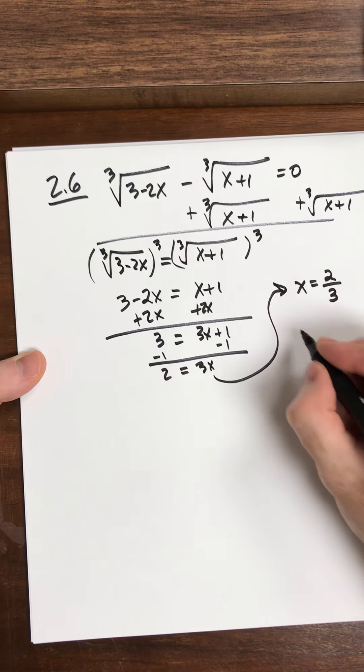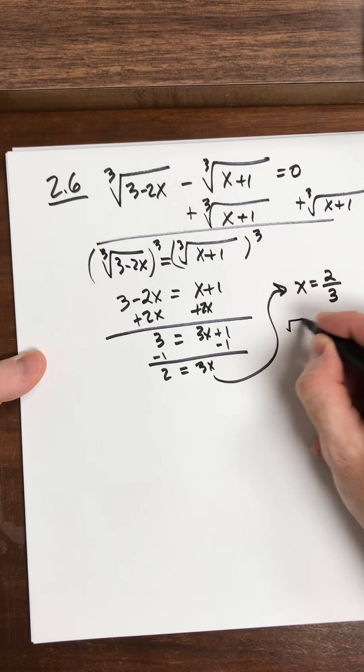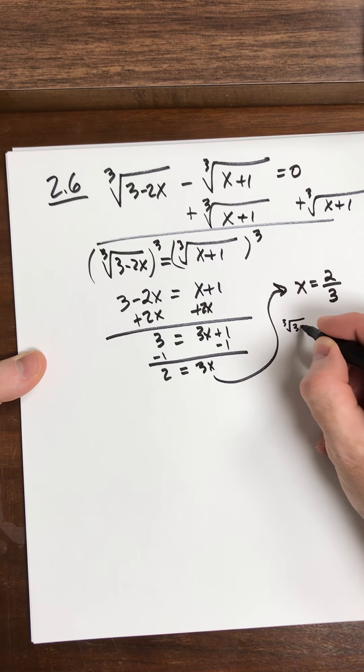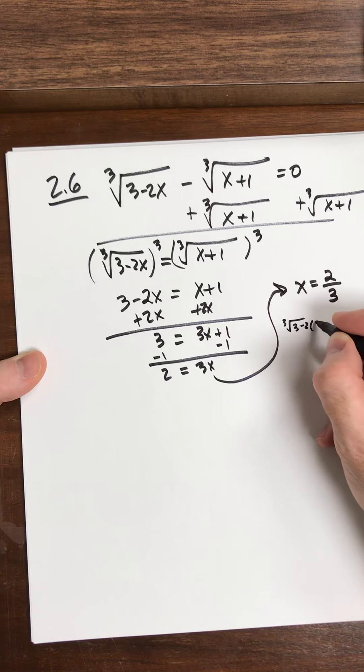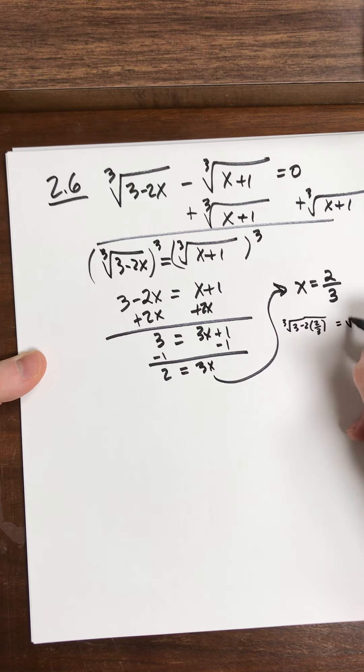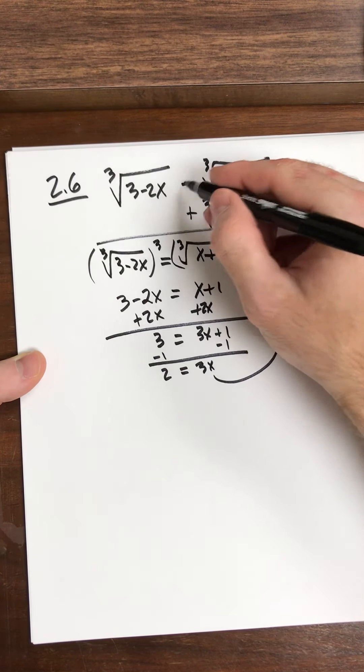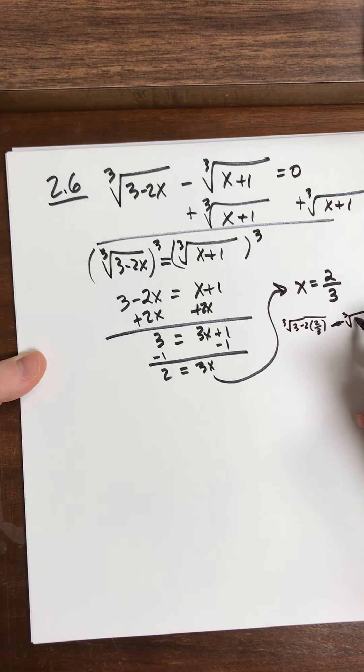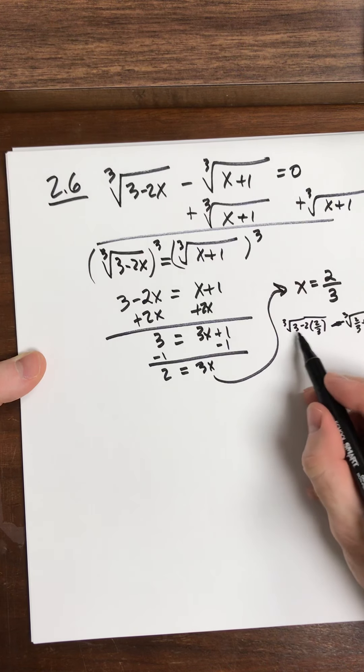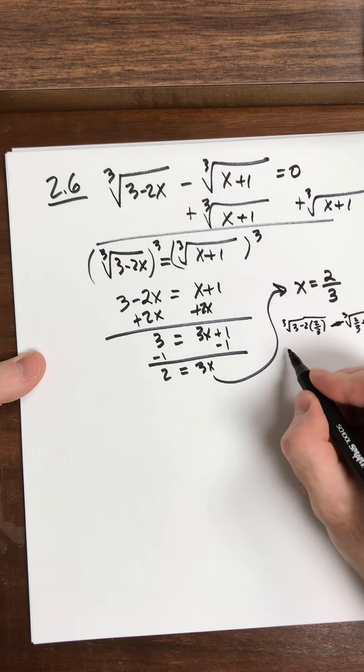If I throw in 2 thirds here, so that's cube root of 3 minus 2 times 2 thirds equals the cube root... let's do minus, because we're going to plug it into the original, 2 thirds plus 1, all equal to 0.